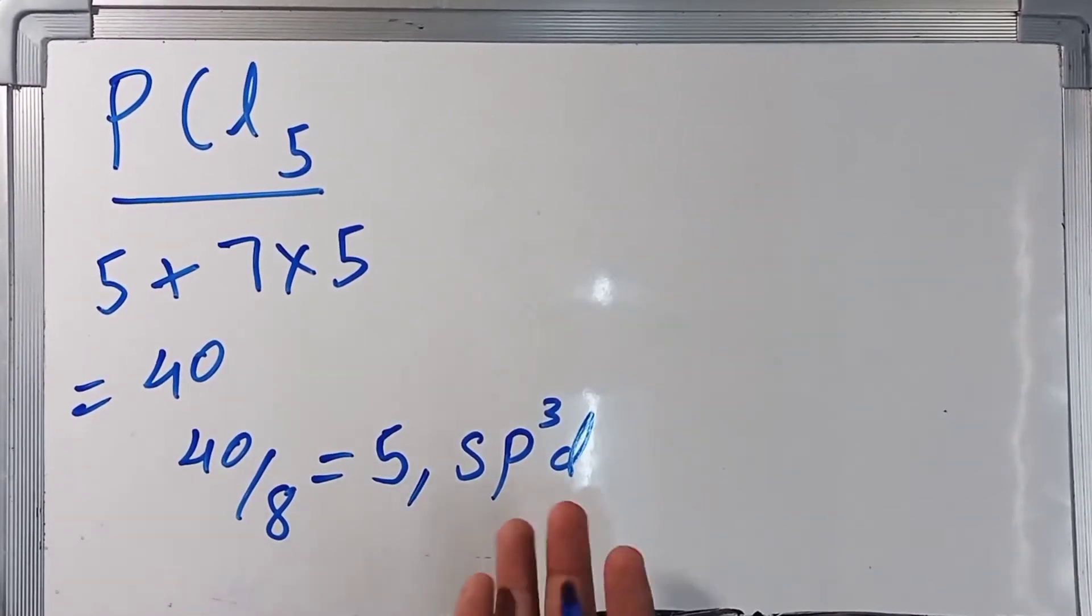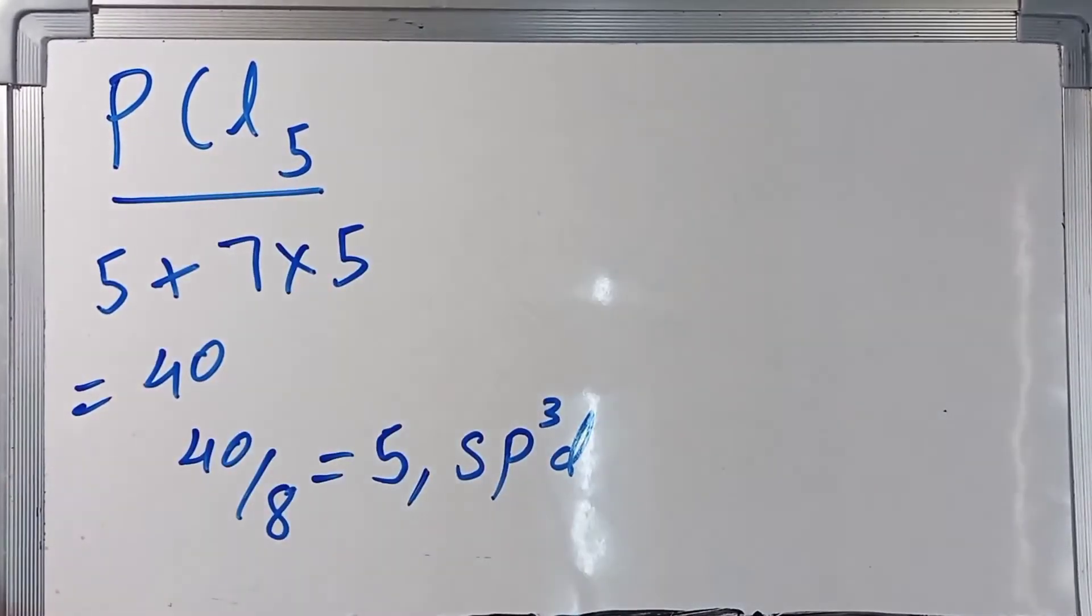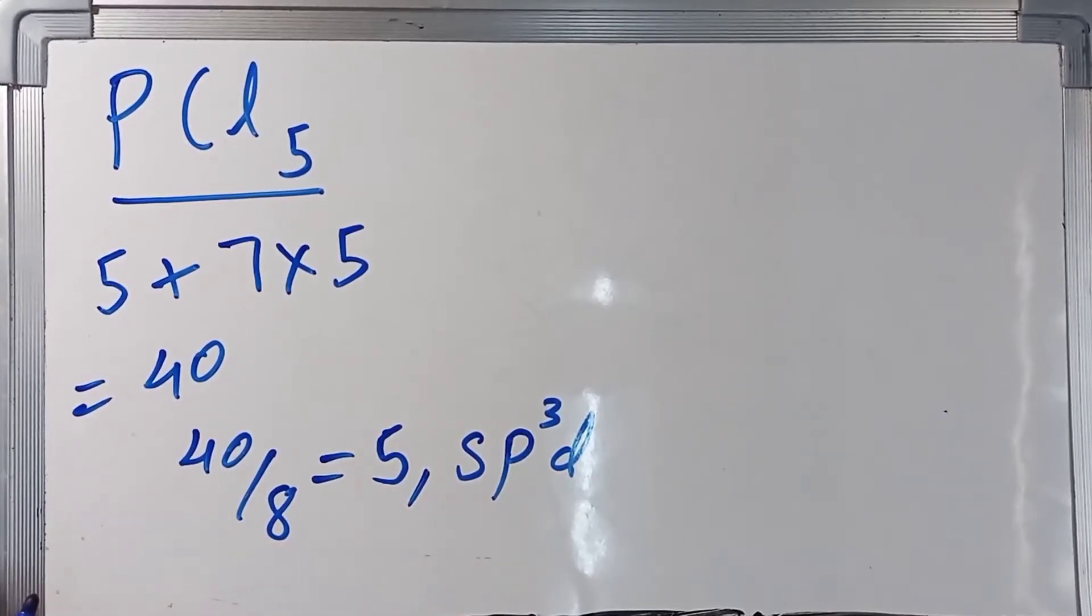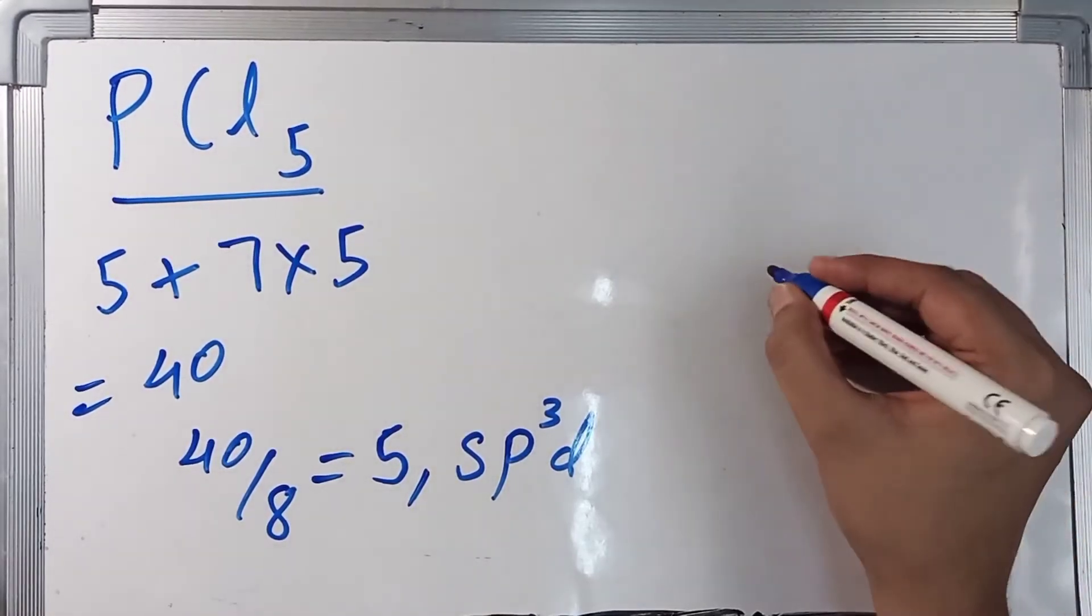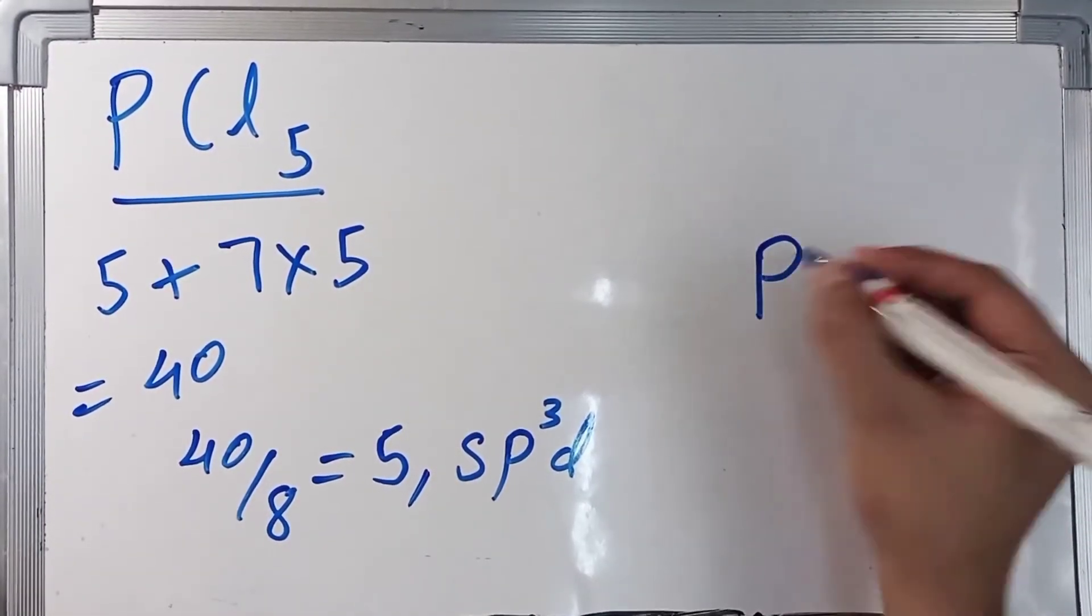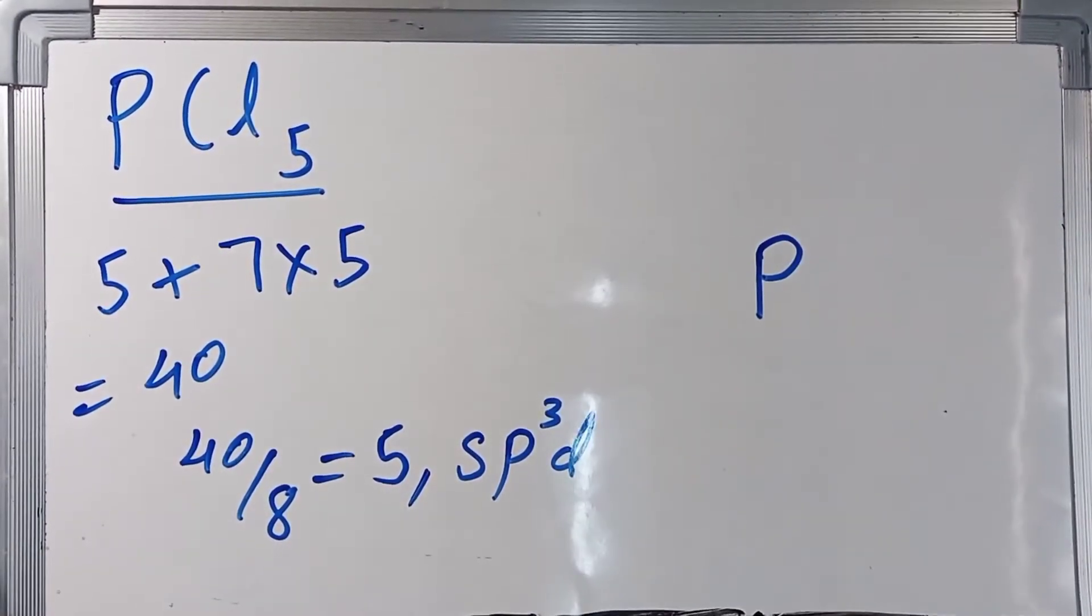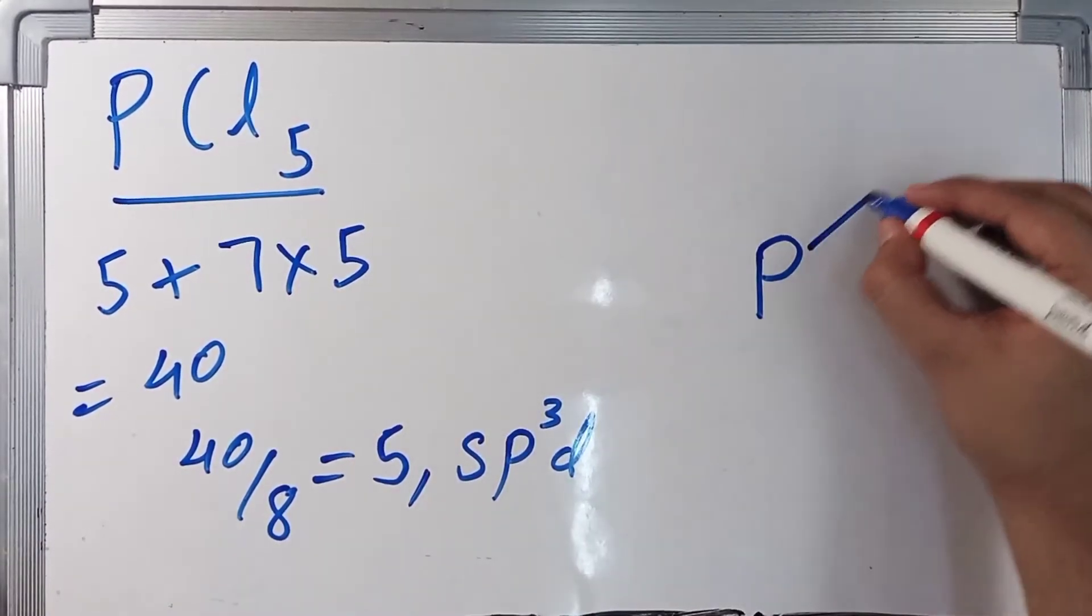Now we know the structure of PCl5, which is sp3d. This sp3d hybridization means that it is trigonal bipyramidal. We are going to write the central atom P, which is phosphorus, and a triangle.